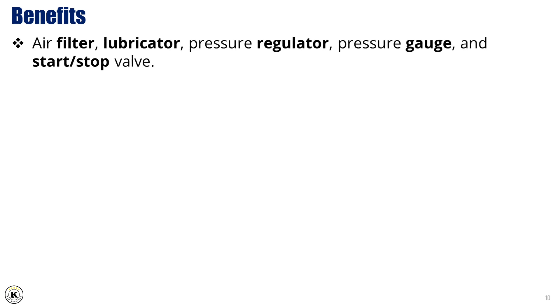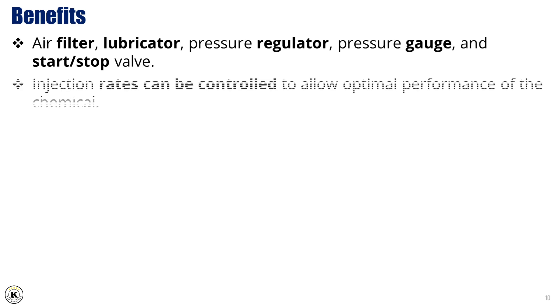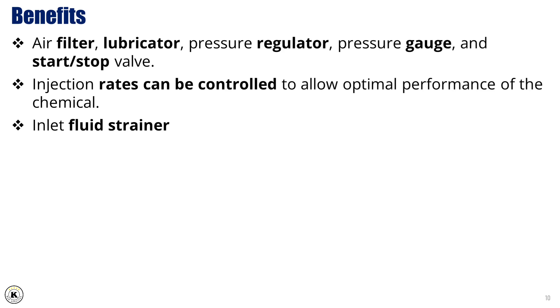Benefits. The TechSteam Chemical Injection Pump offers a range of built-in features that provide significant operational benefits in the field. It comes equipped with an air filter, lubricator, pressure regulator, pressure gauge, and a start-stop valve, giving operators full control over air supply and pump activation. One of its key advantages is the ability to precisely control injection rates, allowing for optimized chemical performance based on specific well conditions. The pump includes an inlet fluid strainer, helping to protect internal components from contamination and extend equipment life.